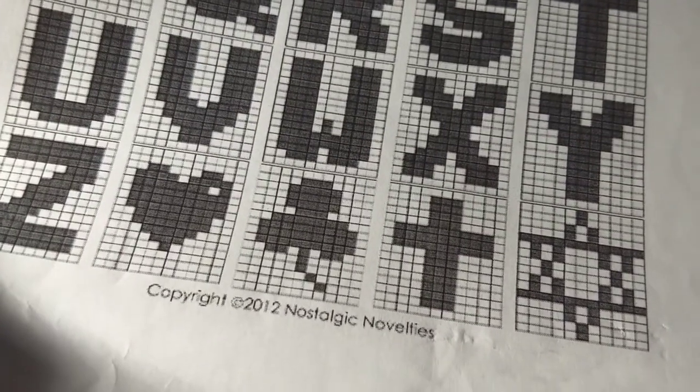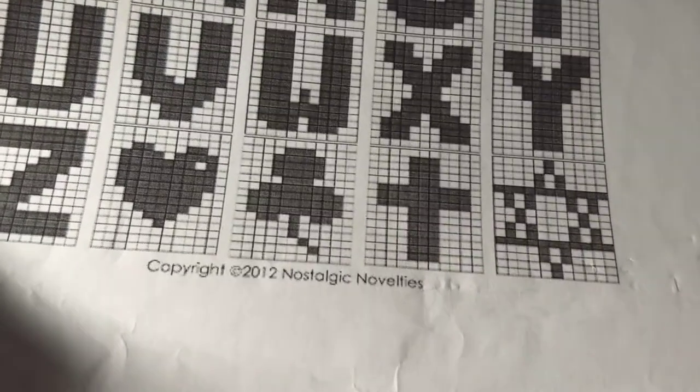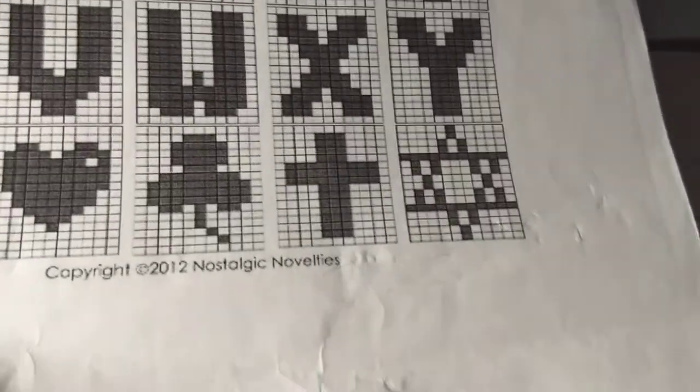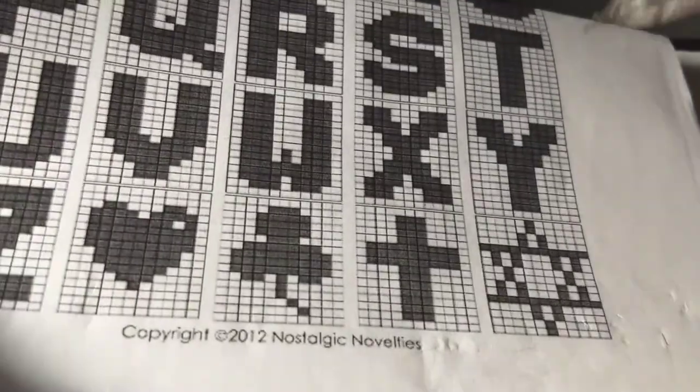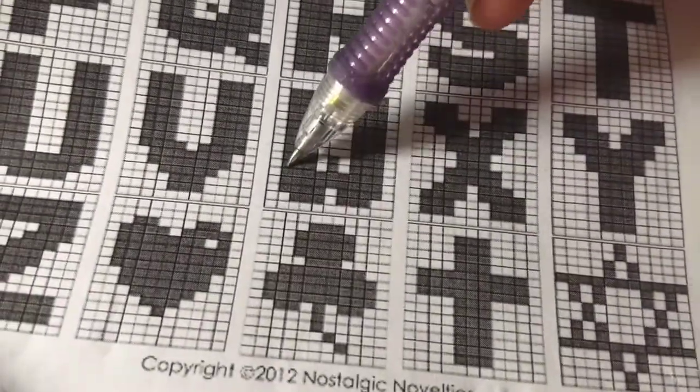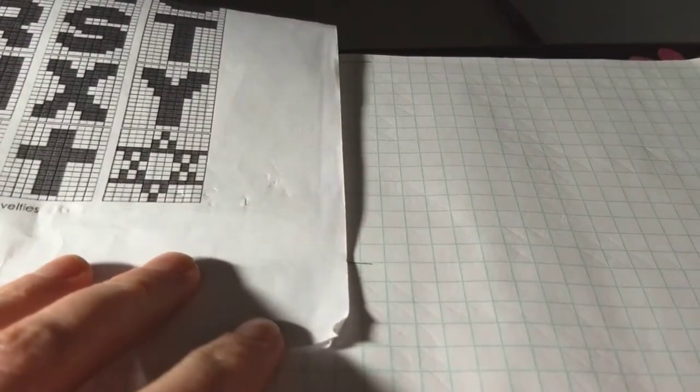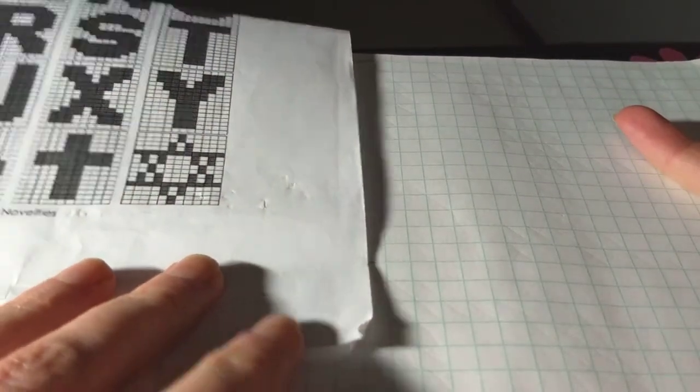One thing that I often do to denote where my borders are going to be and help me keep track of what empty boxes I need is I will actually draw a line. On the grid paper, let me show you what I typically do, and it doesn't have to be fancy, it's simply for your reference.